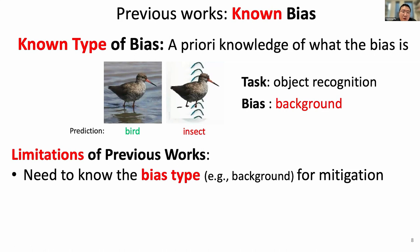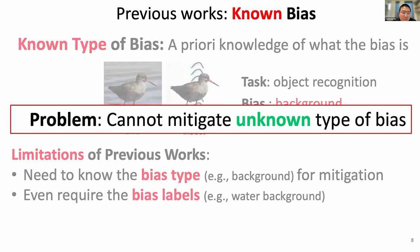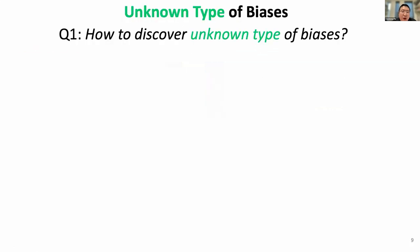Therefore, the method divides the later pipeline for bias mitigation. Even more so, some methods require the bias labels — not only the background type, but also specifying the class, such as the water background. So these are all pre-known. Those methods in the literature obviously cannot mitigate unknown types of biases. So we ask the question: how to discover unknown types of biases?